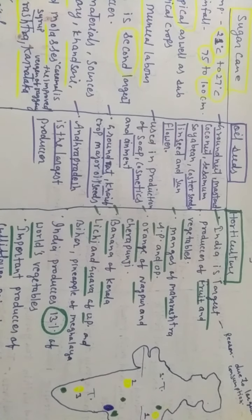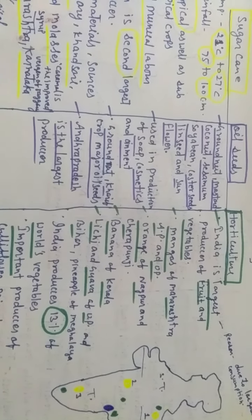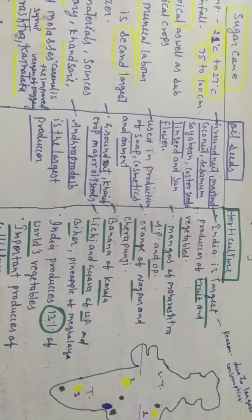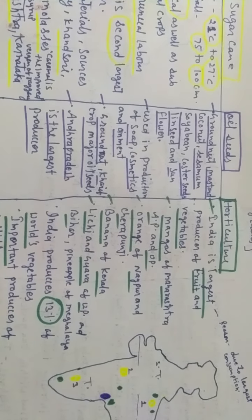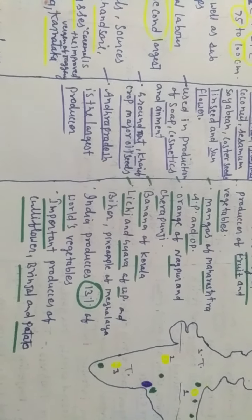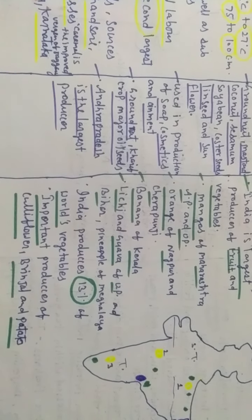Then orange from Nagpur and Cherrapunji, banana in Kerala, lychee and guava from UP and Bihar, and pineapple from Meghalaya. India produces 13% of the world's vegetables.